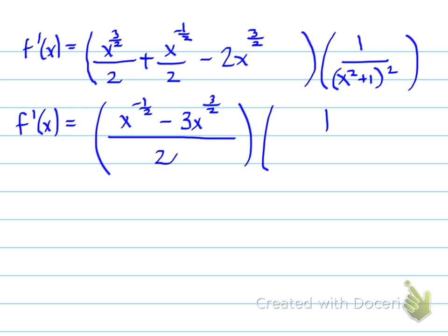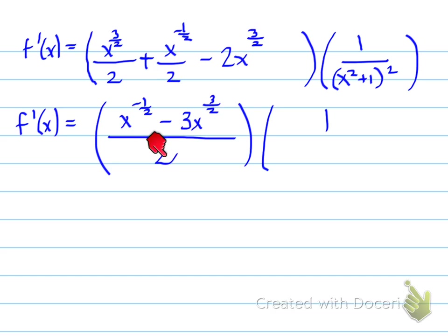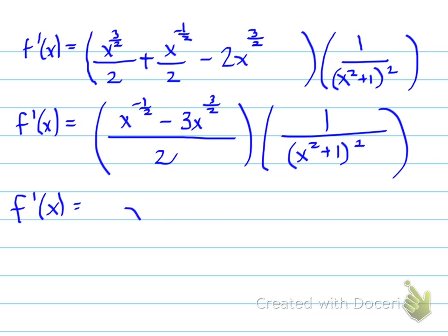Why do we only have 2 terms when we started with 3? There are two x to the 3 halves terms — those are like terms. Collecting them: 1 minus 4 over 2 gives us a coefficient. The common denominator is 4 over 2, so 1 minus 4 gives us negative 3, yielding negative 3x to the power of 3 over 2.